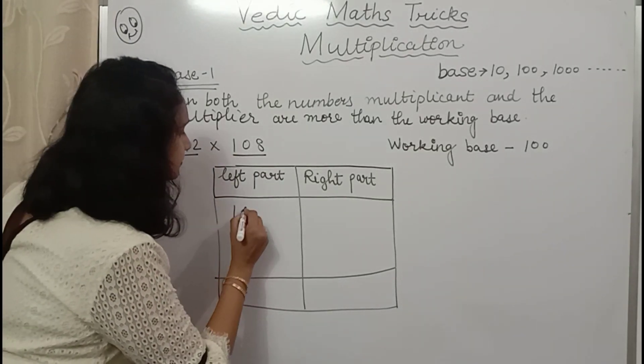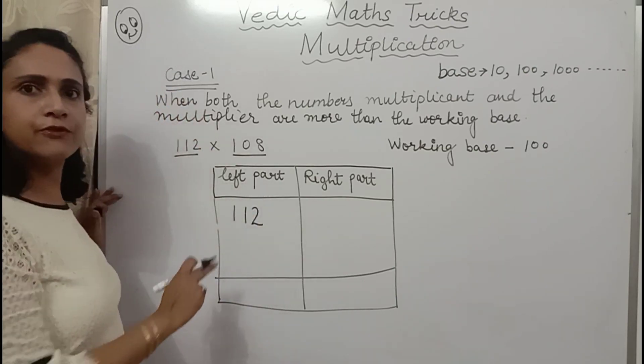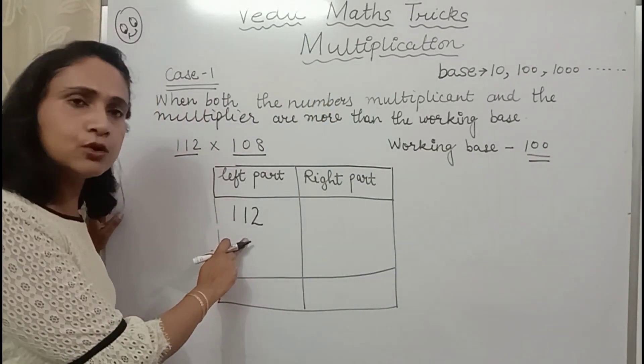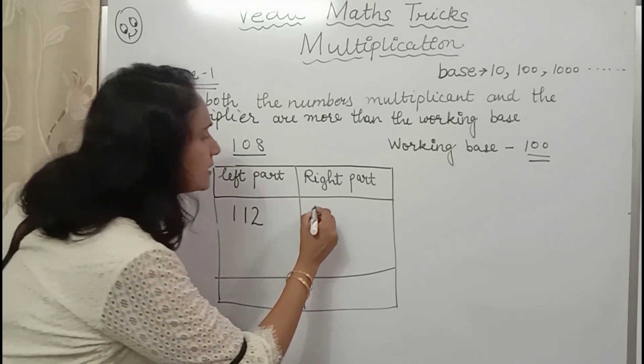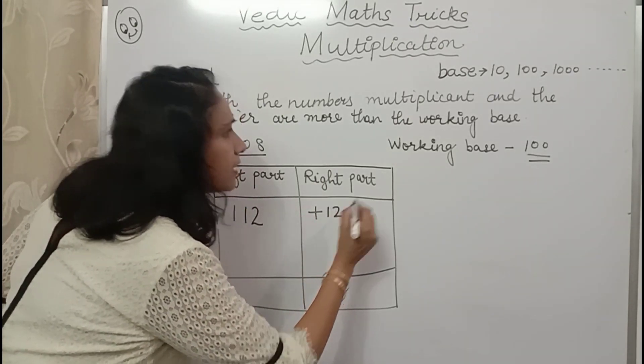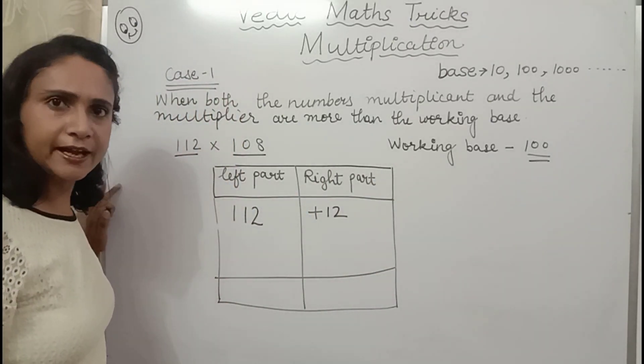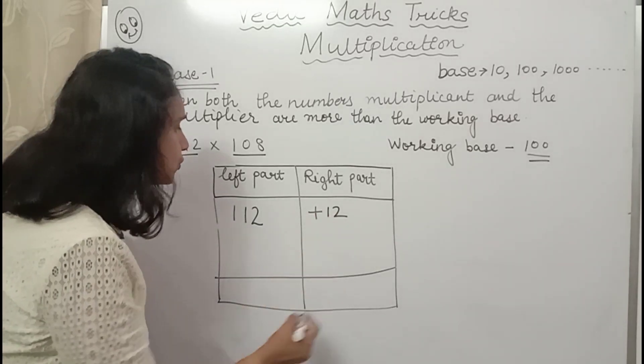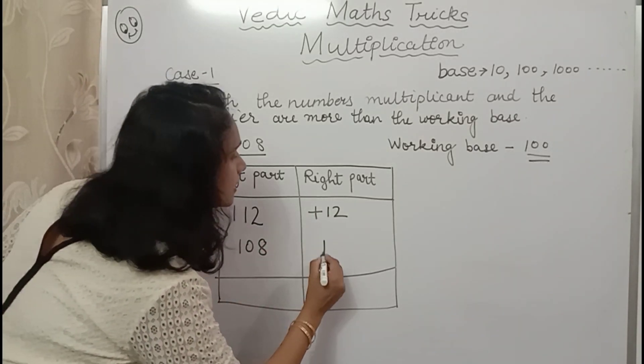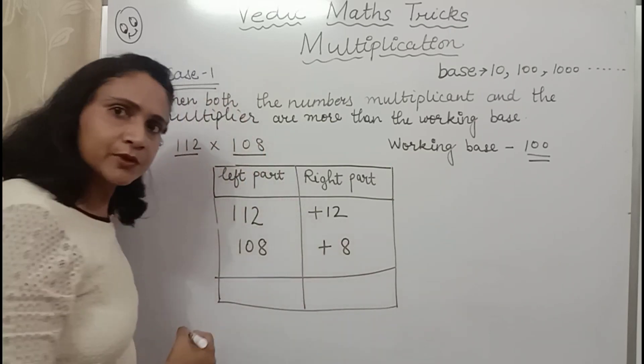112. In 112, working base is 100 as it is closer to 100. Now how much is surplus here? 100 to 112, how much more? How much is surplus? That is 12. 108. How much is surplus? 8.